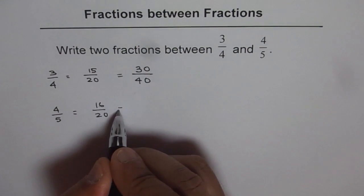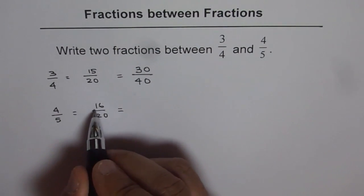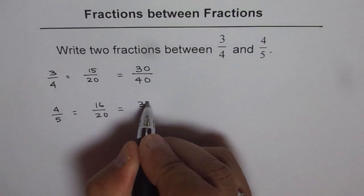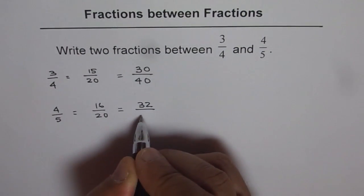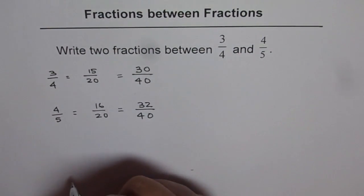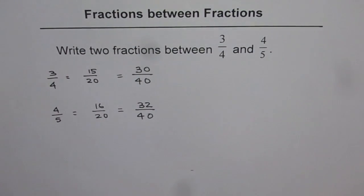For the next one, what do we get? 16 times 2 is 32, and 20 times 2 is 40. Do you see? We get one fraction in between 30 and 32: 31/40. That is in between them.